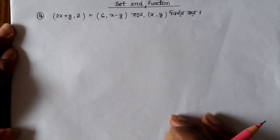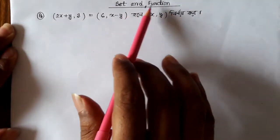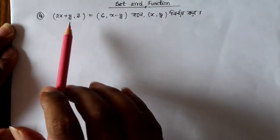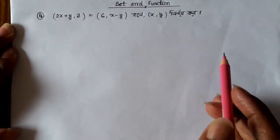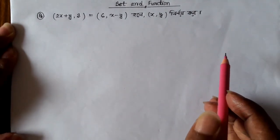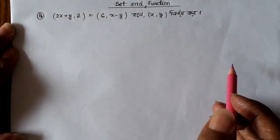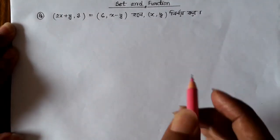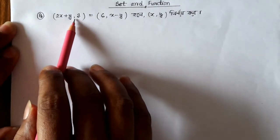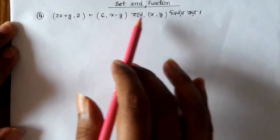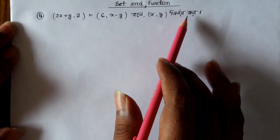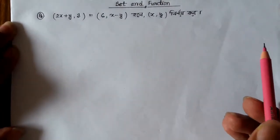I will show you the set and function. We have (2x+y, 3) = (6, x-y), and we need to find (x, y) for this function. First we will see 2x plus y equals 6, and x minus y.